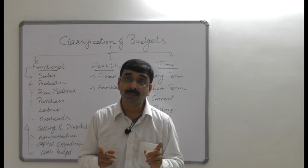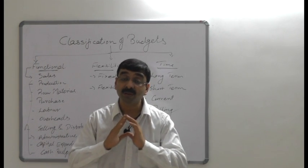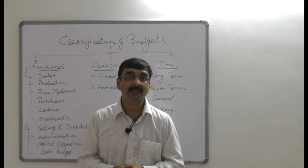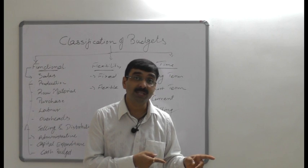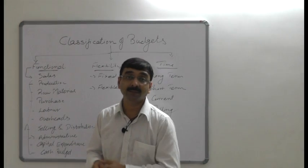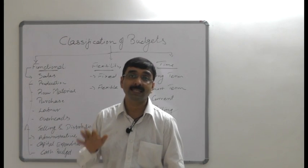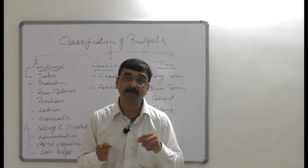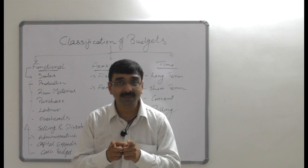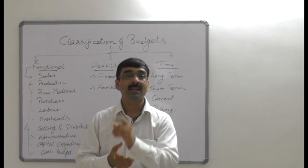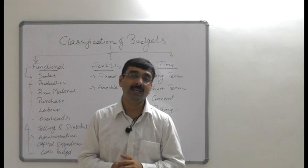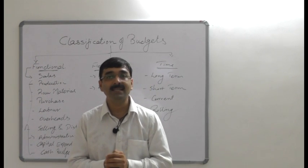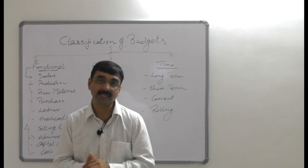The next method is the budgeted balance sheet method. This method is similar to the adjusted profit and loss account method, except that a balance sheet is projected. The balance sheet is prepared with the projected amount of all assets and liabilities except cash at the end of the budget period, and the cash balance is found as the balancing amount.